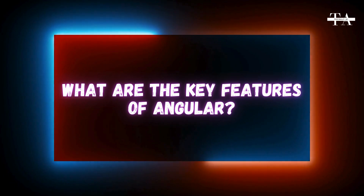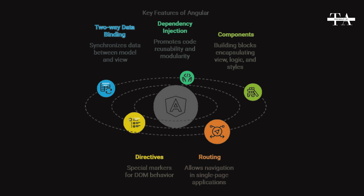What are the key features of Angular? Some key features of Angular include: two-way data binding, which synchronizes data between the model and the view; dependency injection, which promotes code reusability and modularity; components, the building blocks of Angular applications, encapsulating the view, logic, and styles; directives, special markers in the DOM that tell Angular to attach a specified behavior to that DOM element; and routing, which allows navigation between different views or components in a single-page application.